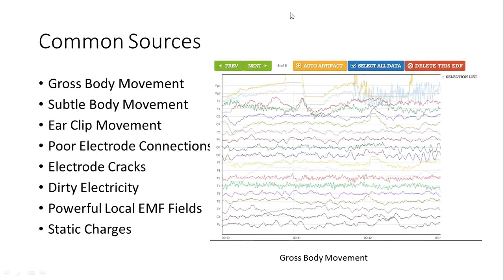Common sources of artifact are gross body movement, subtle body movement, ear clip movement, poor electrode connections, electrode cracks. Some of the electrodes can develop fine cracks because people dip the electrode into the paste and scoop it out. That's the worst thing you can do for your electrode.